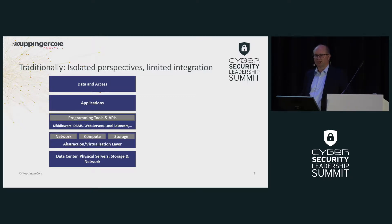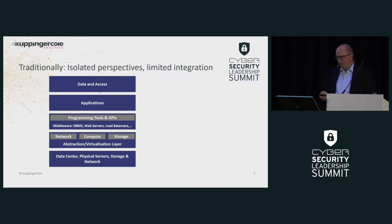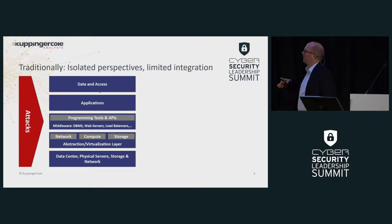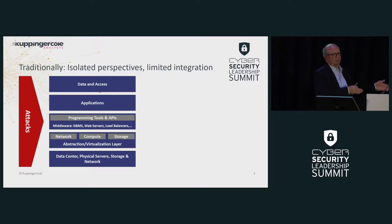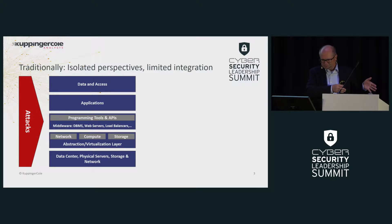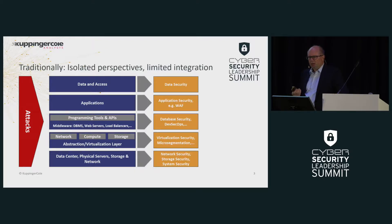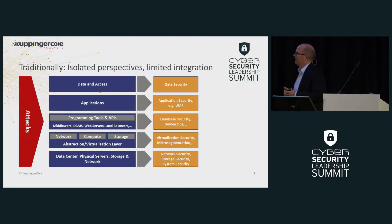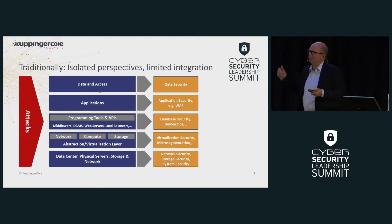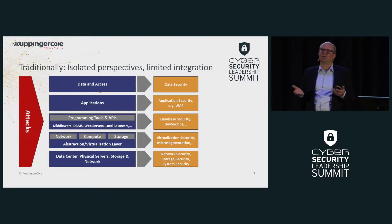We could also factor in containers and similar technologies. We have the middleware, applications, data, and access. In fact, all of these layers are under attack. We have certain types of attack vectors targeted at different levels, from the BIOS up to the applications. Obviously we need to counter that, so we also have a variety of security technologies built to protect the various layers. This already shows, to some extent, one of the key challenges we face in cybersecurity.